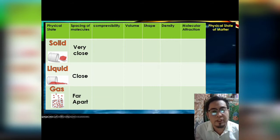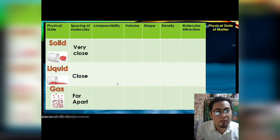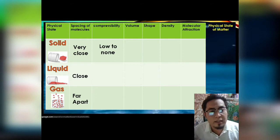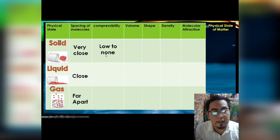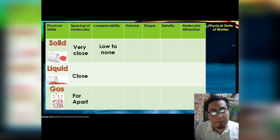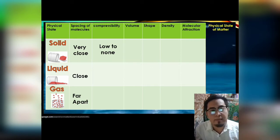Now let us look at their compressibility, or their ability to be compressed. In solid, it ranges from low to none. A solid can be compressed but with very minimal compression, or sometimes it cannot be compressed at all. For example, clay is a solid that can be compressed with low compressibility, but a solid like metal cannot be compressed.